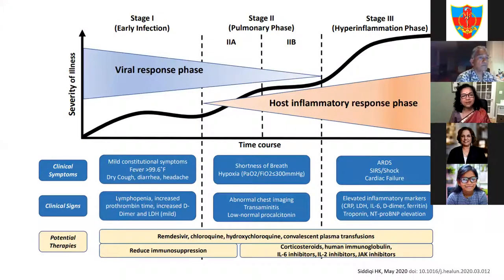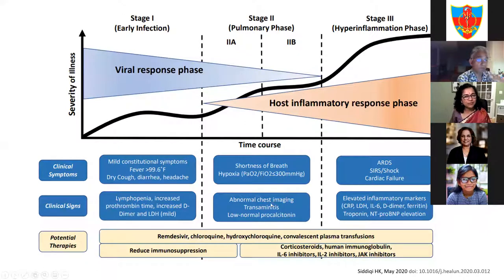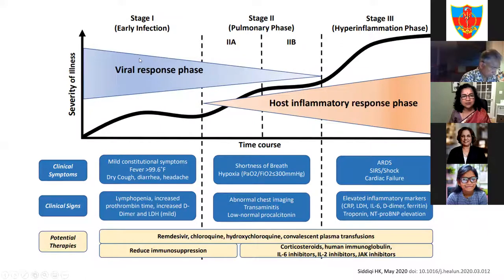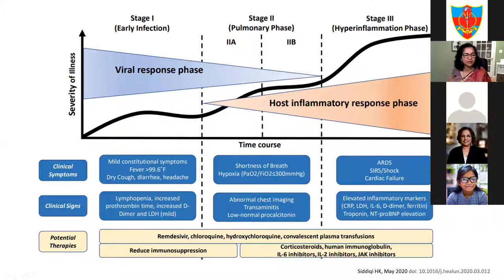This diagram is a quick recap of the stages of COVID-19 infection. The severity of illness is on the y-axis and the time course on the x-axis. Early in the infection, it's primarily the time of viral replication, marked by constitutional symptoms: low-grade fever, muscle aches, diarrhea, headache, sometimes a dry cough, and so on.